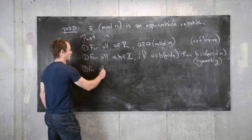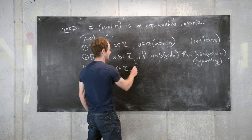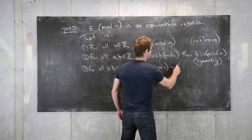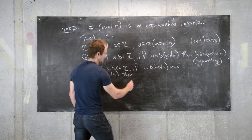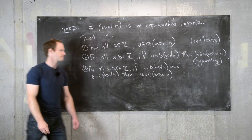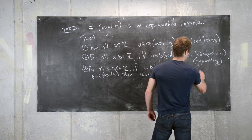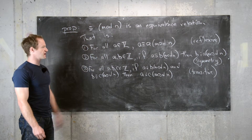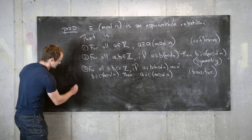The third condition is transitivity: for all integers a, b, and c, if a is congruent to b mod n and b is congruent to c mod n, then a is congruent to c mod n. These three properties together make congruence modulo n an equivalence relation.